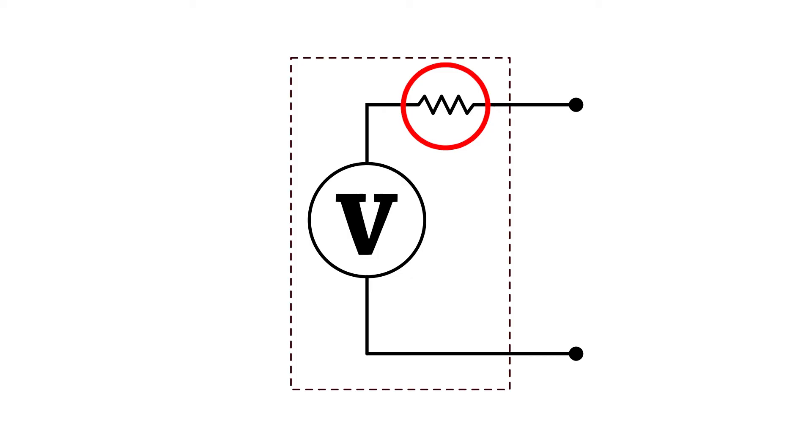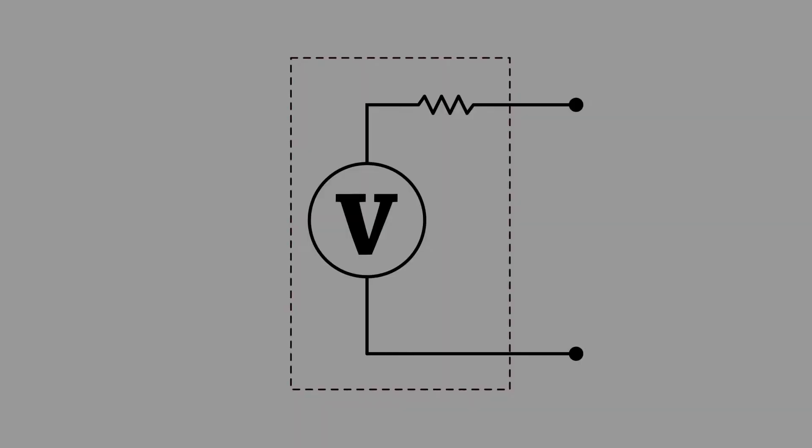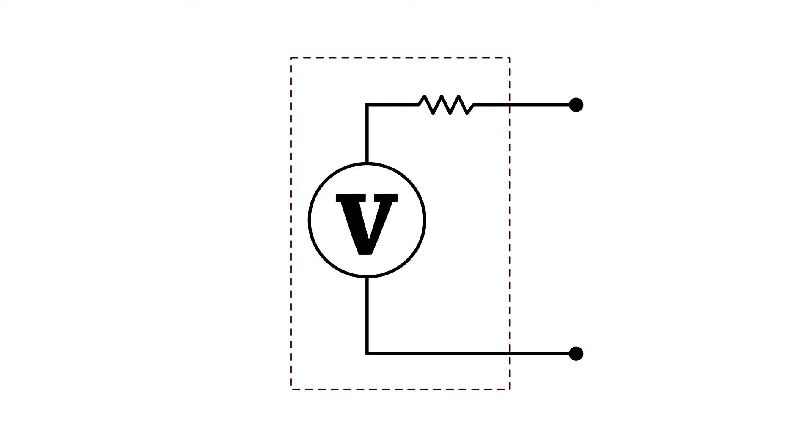A theoretical ideal voltage source would have zero ohms of source impedance, which implies that if you shorted it out it would be able to supply an infinite amount of current, which of course is not possible. So all real world voltage sources have some finite amount of source impedance.